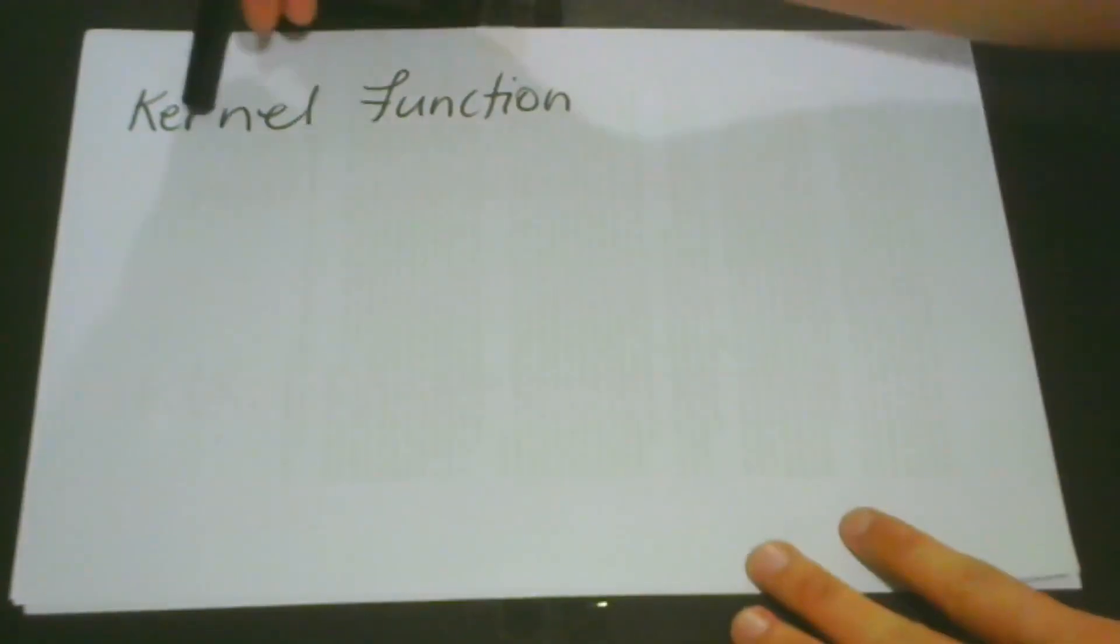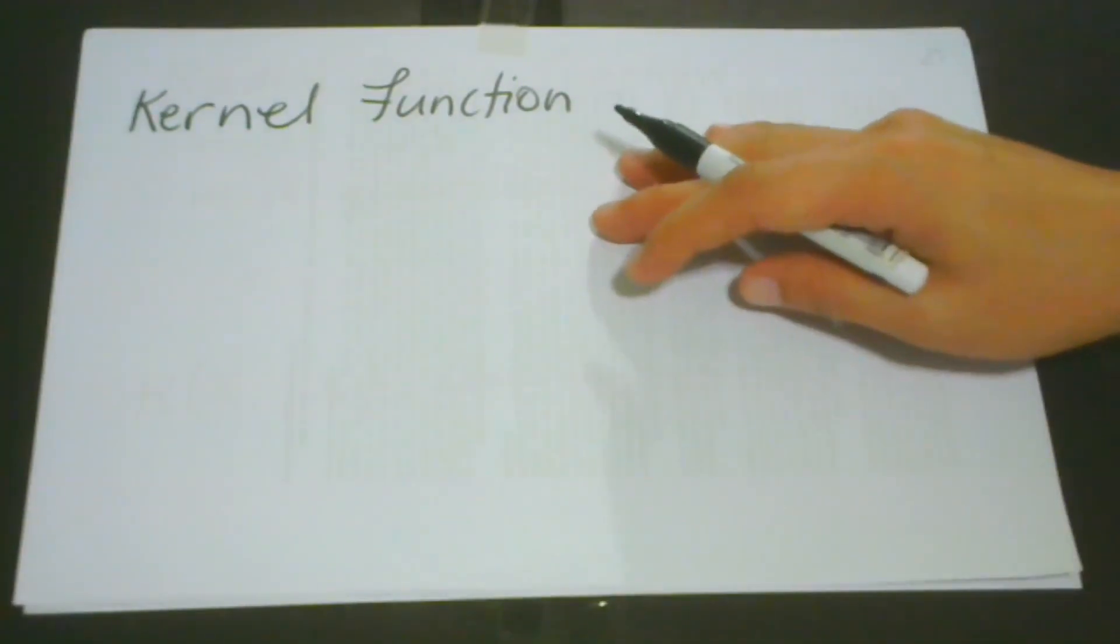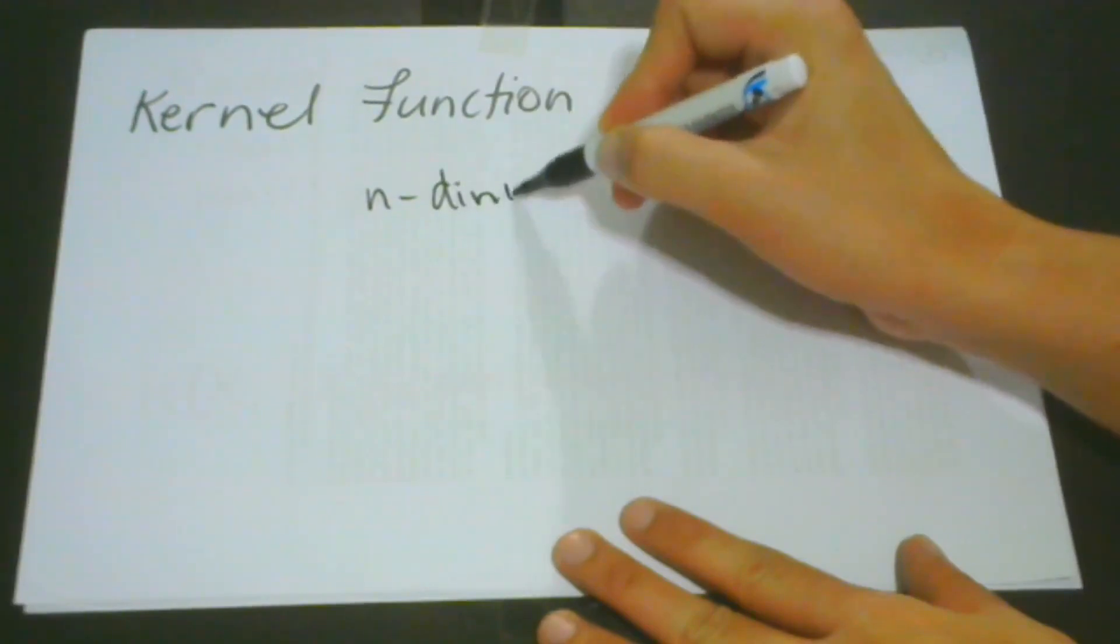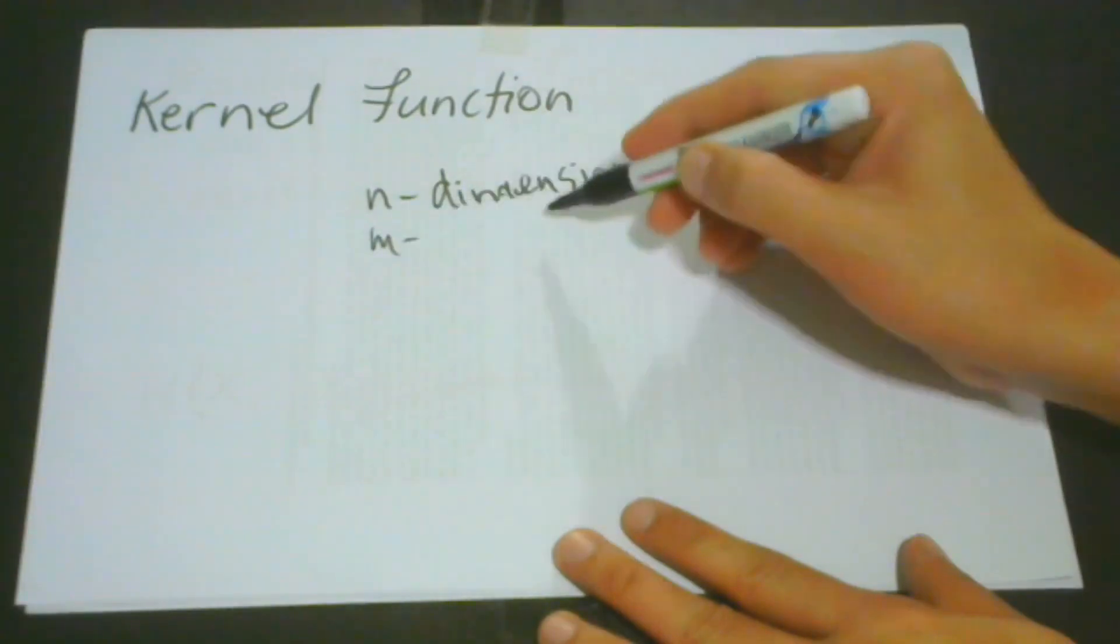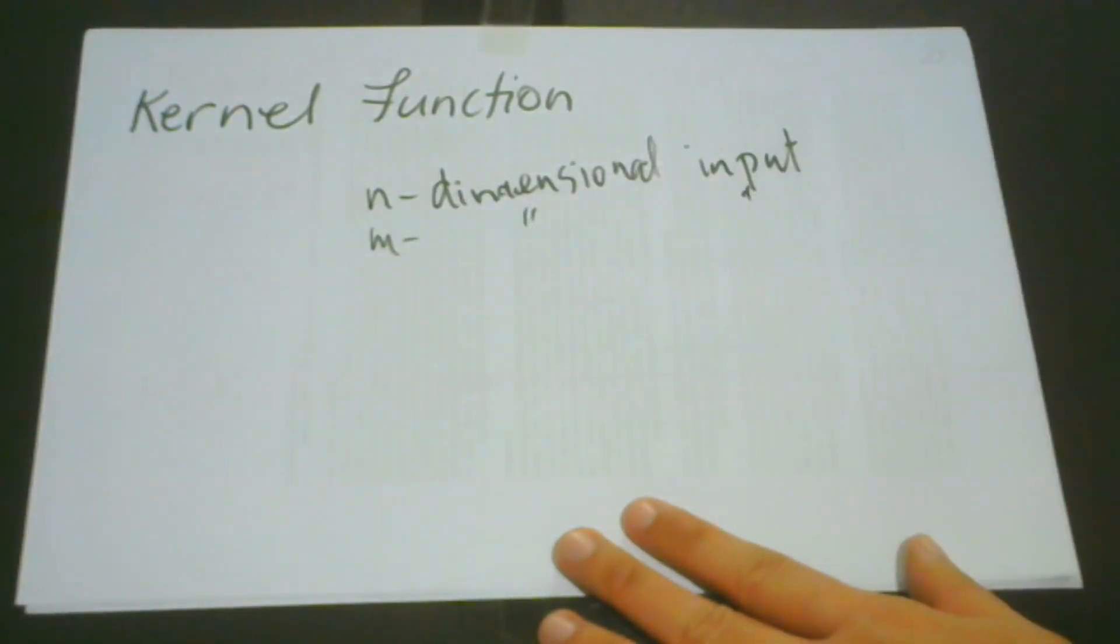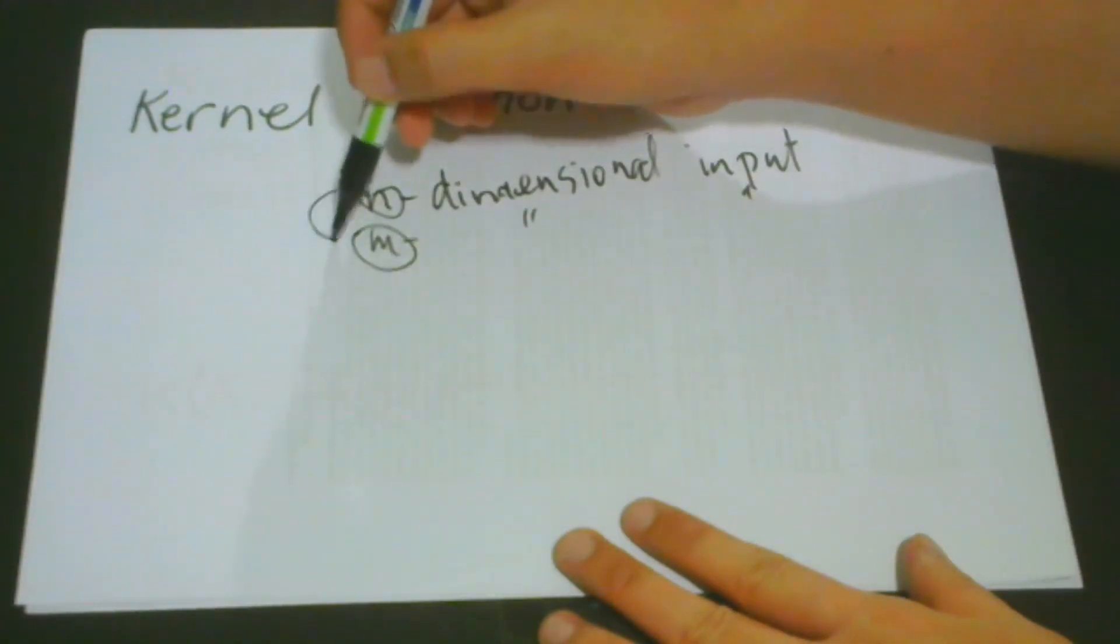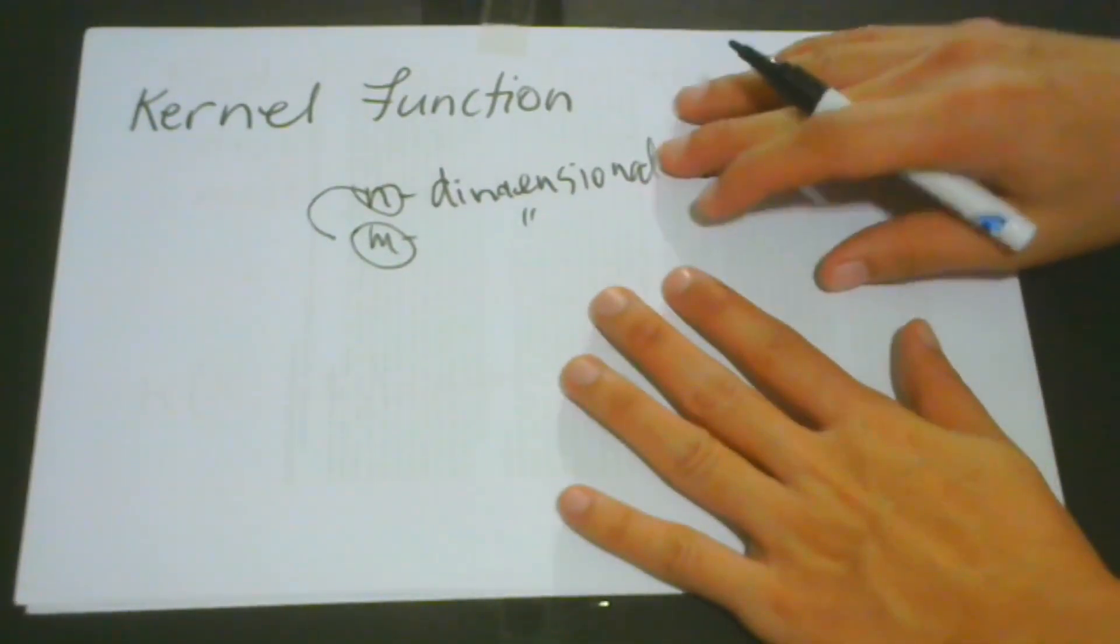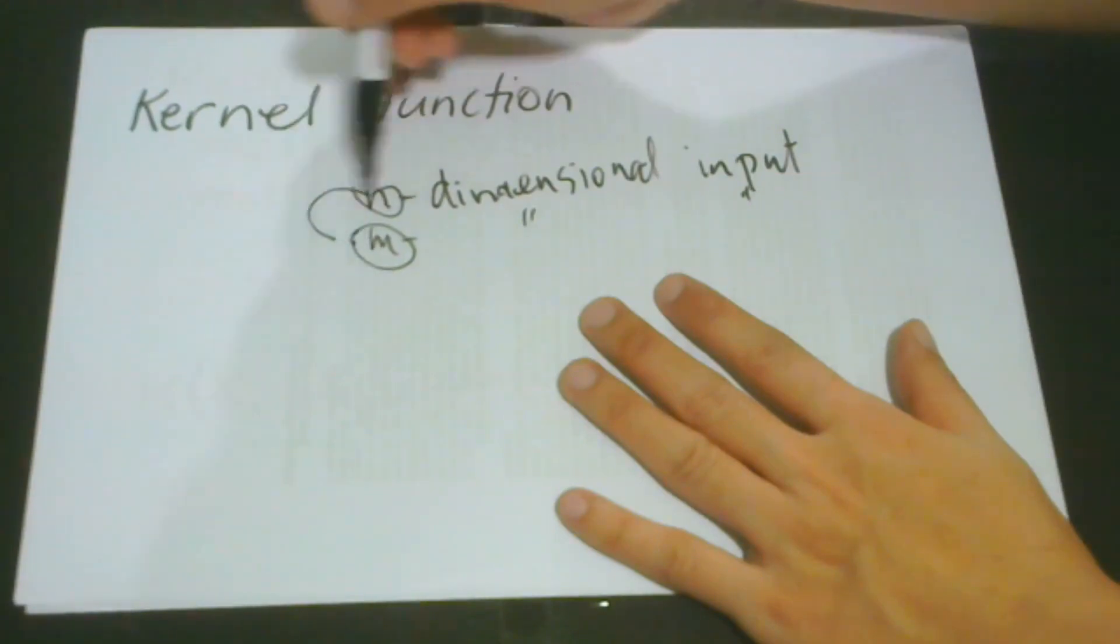So what is a kernel function? A kernel function is actually used to transform our n-dimensional input to an m-dimensional input. So here we have the n and the m, from n going to m. This usually happens in higher dimensional spaces wherein m is much higher than n.